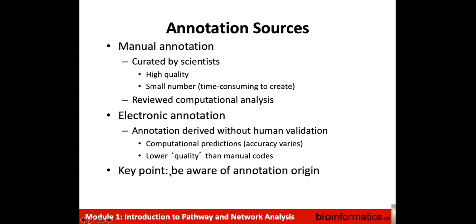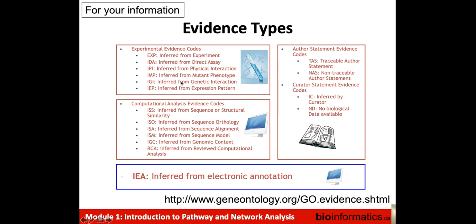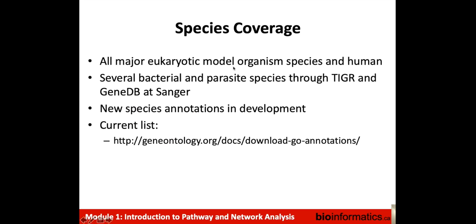We can understand the annotation origin because each annotation is associated with an evidence code. All of the evidence codes in red are manual or human curated or reviewed, and one called IEA — inferred from electronic annotation — is not. There are two major sources of annotation: manual, which are curated by scientists and are very high quality though time consuming to create; and electronic annotation, which is derived without human validation. Electronic annotation is frequently computational prediction, the accuracy varies — some methods like predicting transmembrane regions are more than 95% accurate, but others are lower quality. A key point is to be aware of the annotation origin.